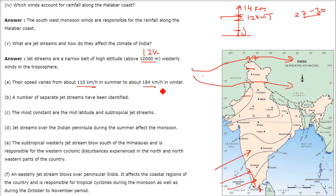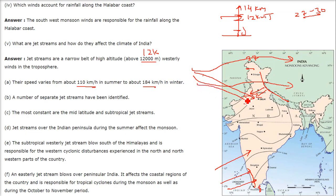There are a number of jet streams identified; the most constant are the mid-latitude and subtropical jet streams. The subtropical westerly jet stream blows south of the Himalayas and is responsible for western cyclonic disturbances — those Mediterranean Sea winds — experienced in the north and northwest part of the country. The easterly jet stream blows over the peninsula region and is responsible for tropical cyclones on the eastern coastal region, during the monsoon as well as during October to November.